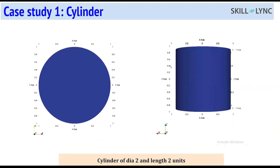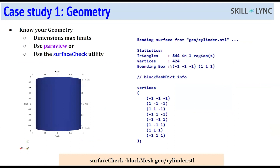The geometry is imported into cfMesh in STL format. An STL file stores geometry as triangles with nodes and surface normals. There are two ways to examine your geometry: visualize it in ParaView or use the surfaceCheck utility. The command is: surfaceCheck, followed by the geometry path - for example, geo/cylinder.stl. In the terminal, inside the cylinder_basics case folder, you can see the zero, constant, geo (geometry), and system folders.